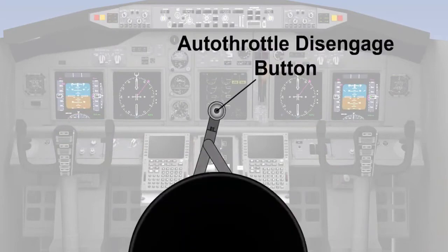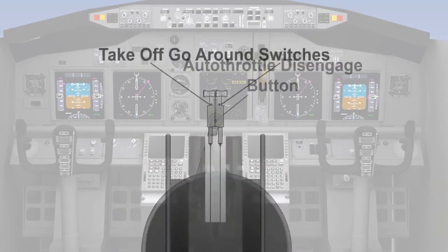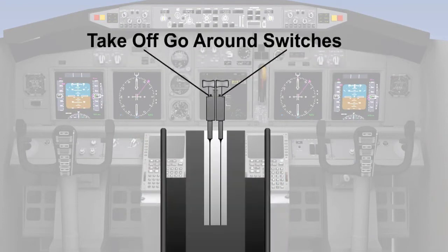The autothrottle is disengaged by pressing a disengage button on the outer part of the throttle levers. There may also be take-off go-around switches on the throttle levers which will cause the autothrottle to engage in take-off or go-around mode when pressed. On the ground, take-off thrust will be the target, and during the approach, go-around thrust will be the target.